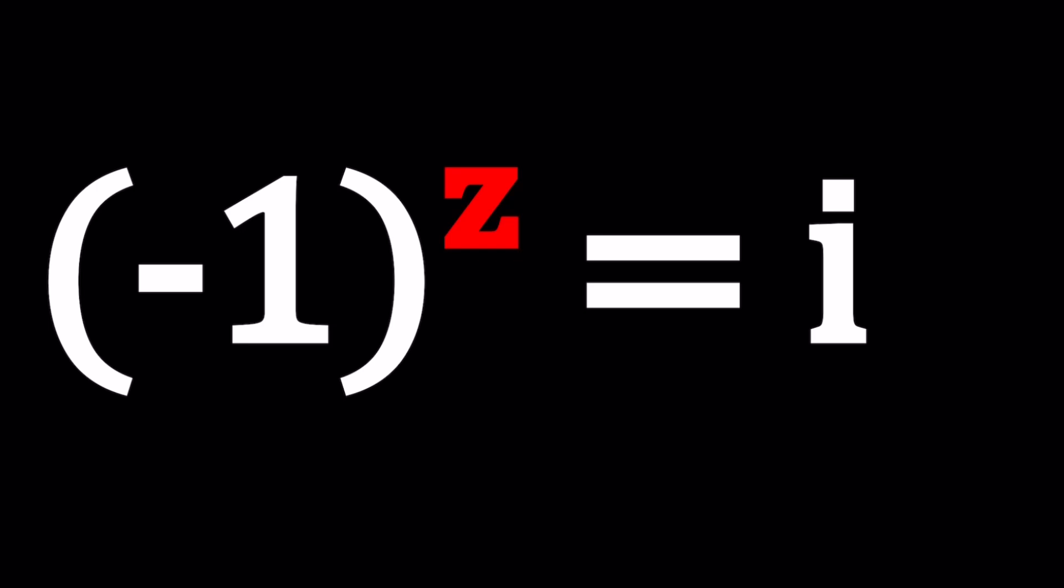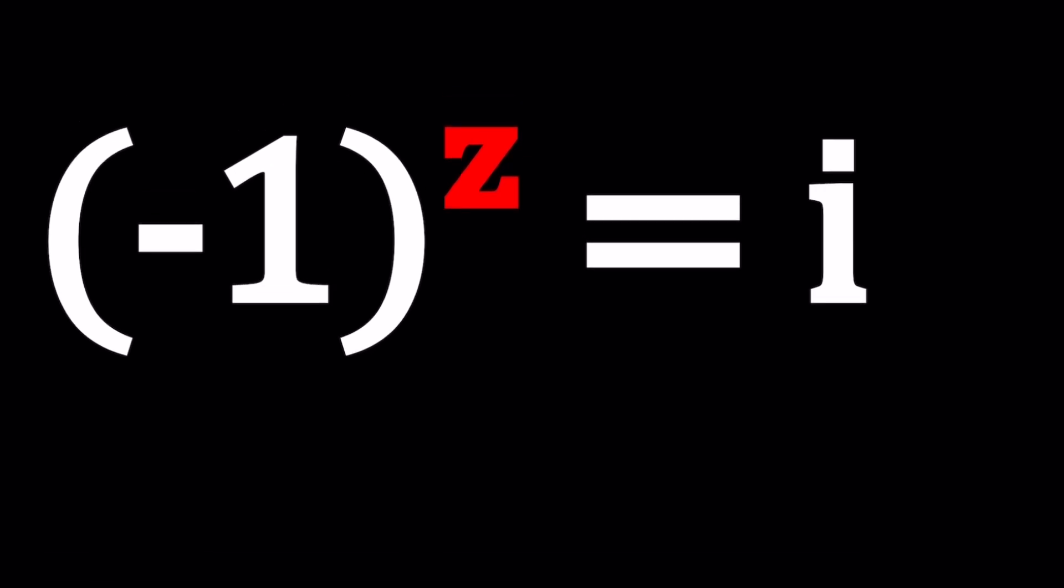Hopefully this will be the correct version and you all will get to see this. So we have negative 1 to the power z equals i and to solve this equation we're going to use exponential forms or polar forms.